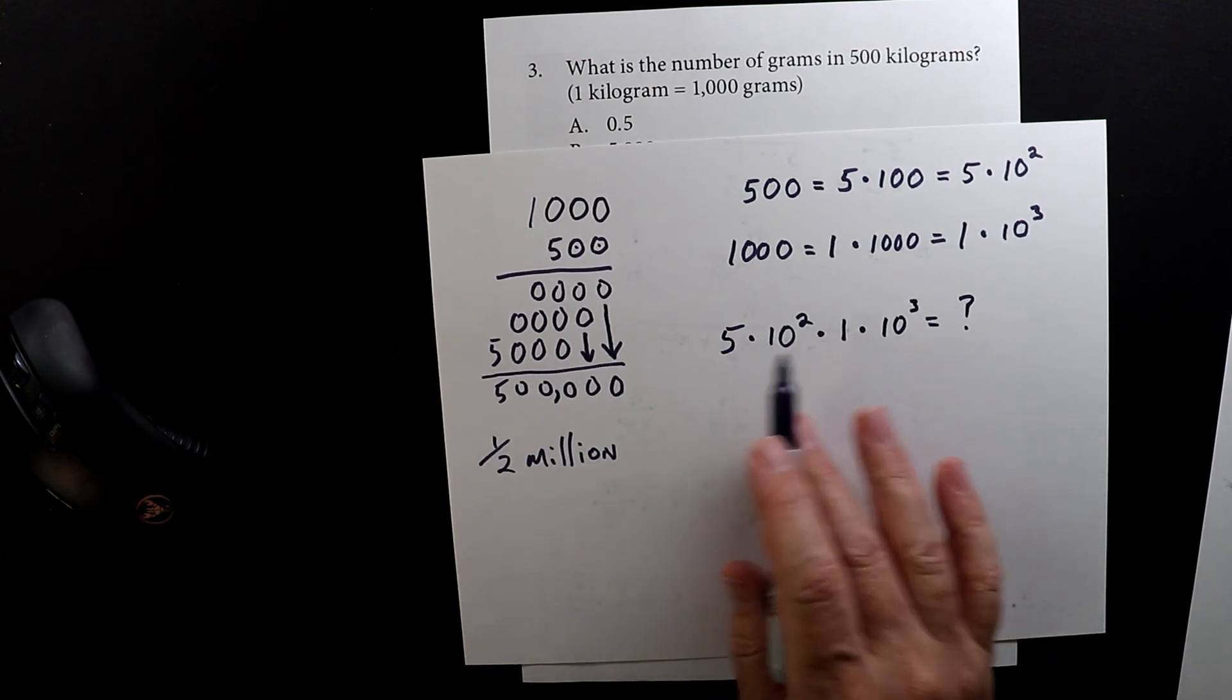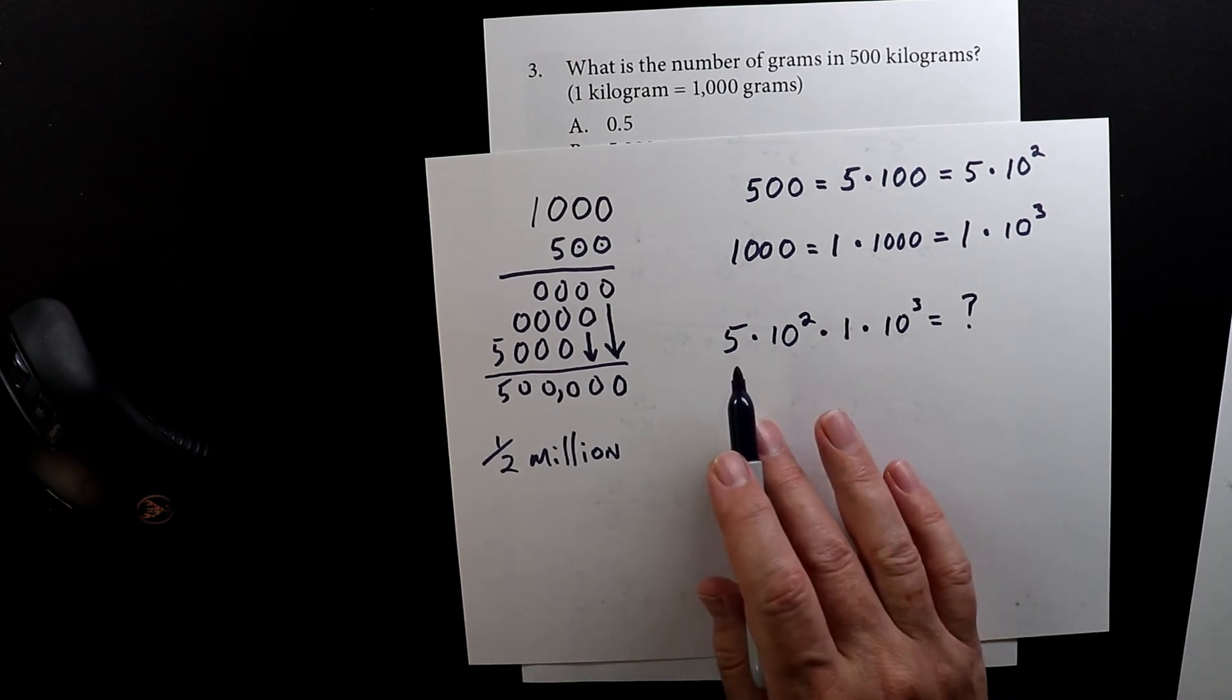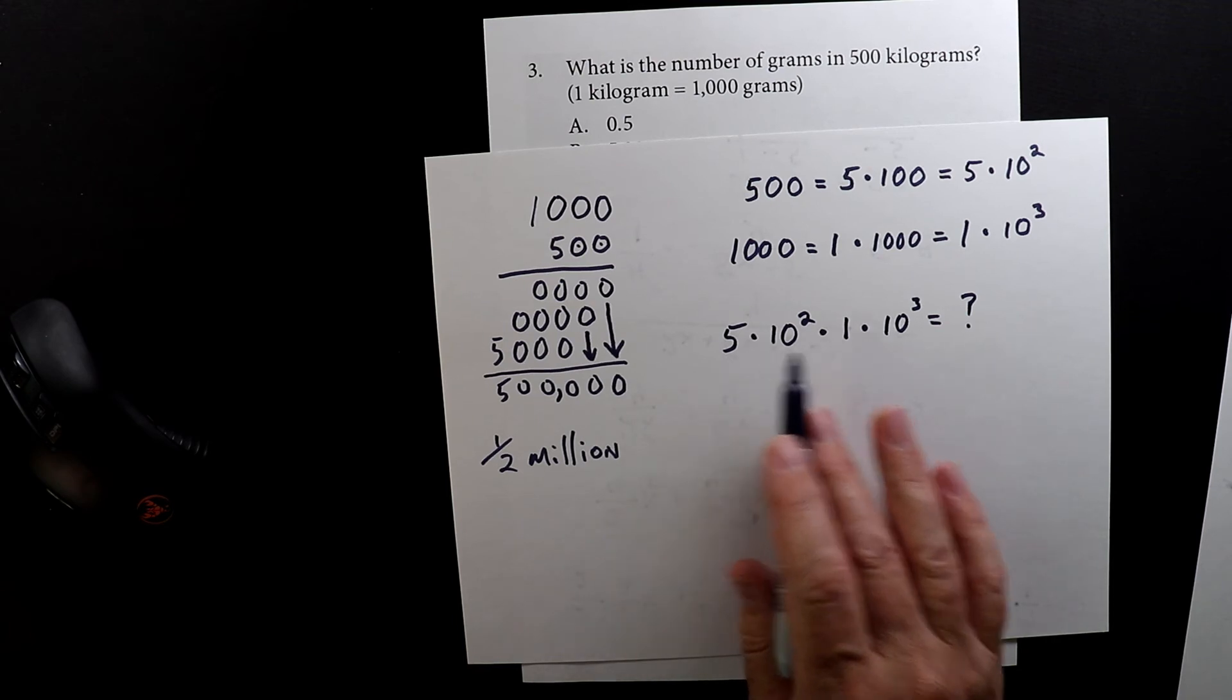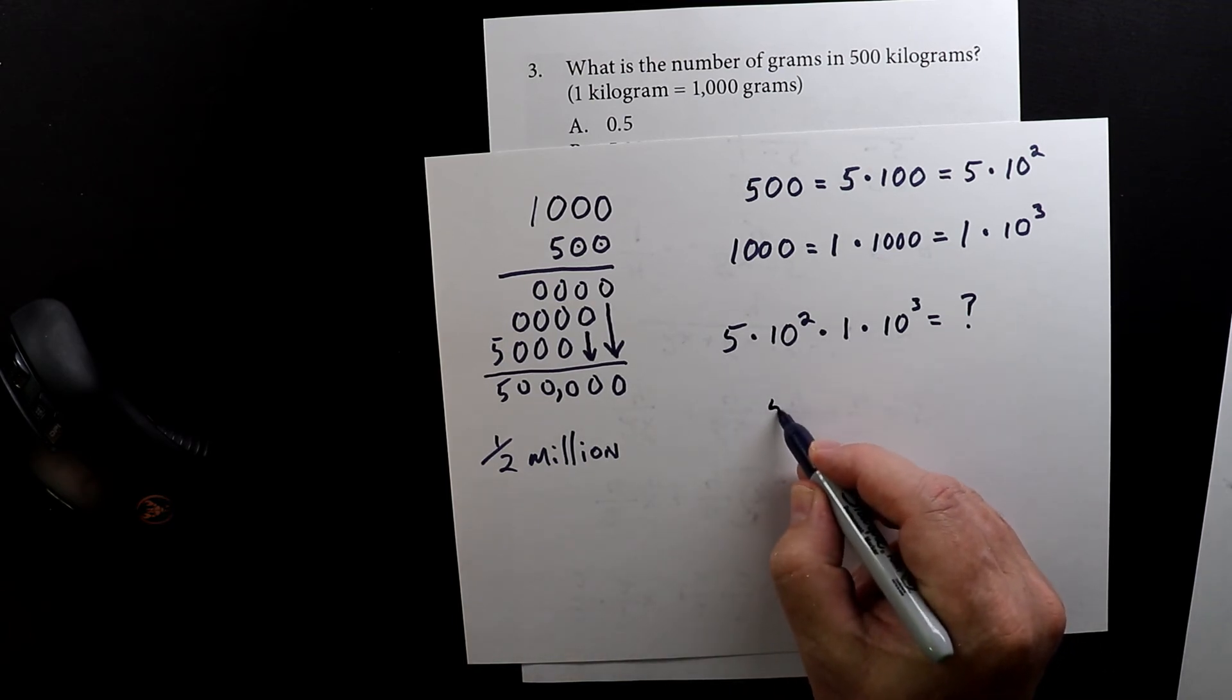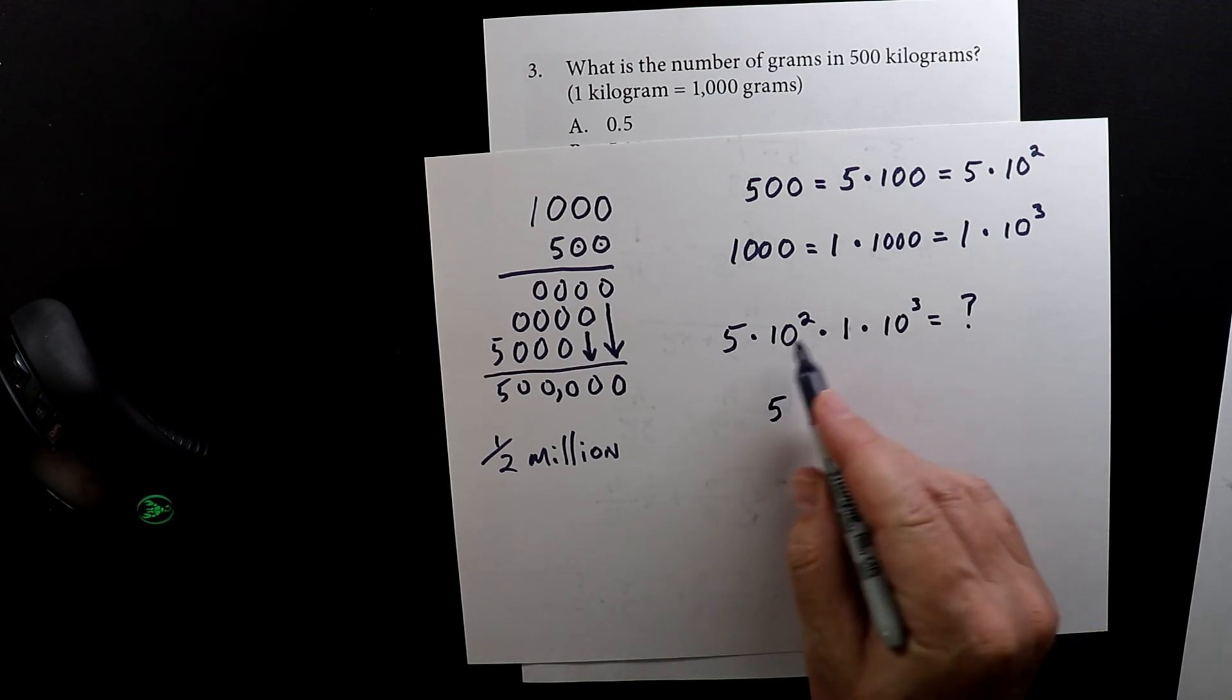Well we do know, but pretend we didn't. Now the next thing I want to do is put these two things together. Do I really need to multiply five times one? You know it equals five, so I'm just going to bring down the five, and I want to group these two things together.